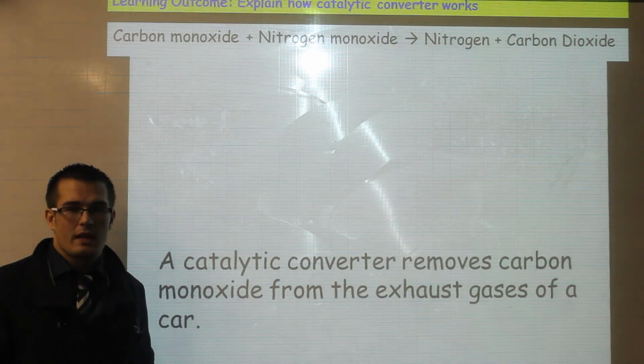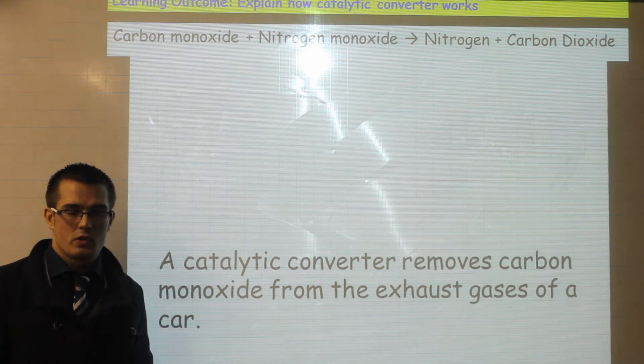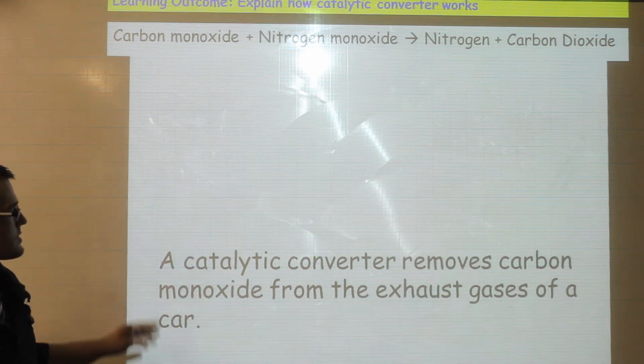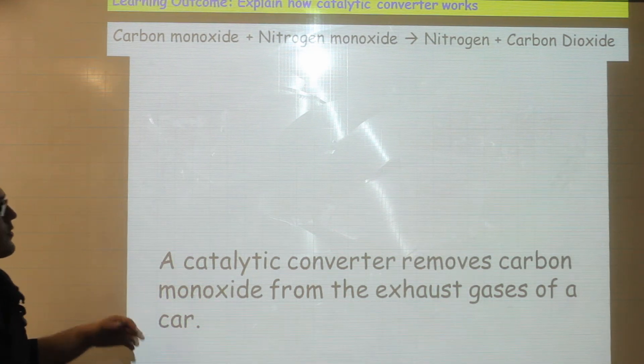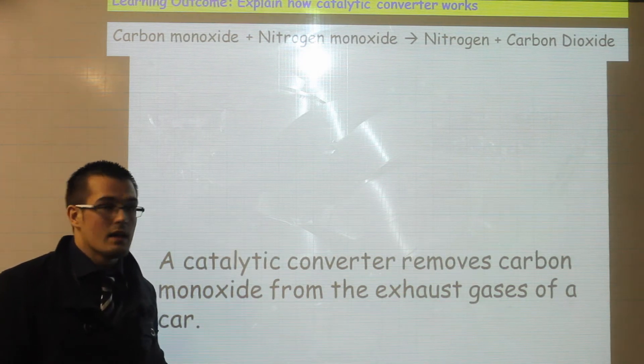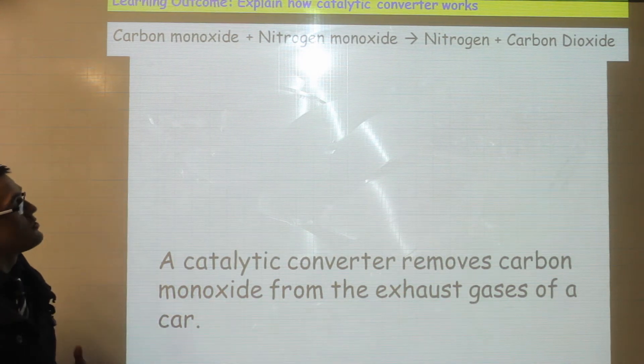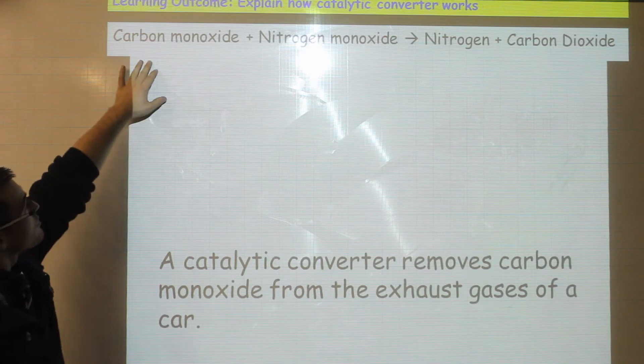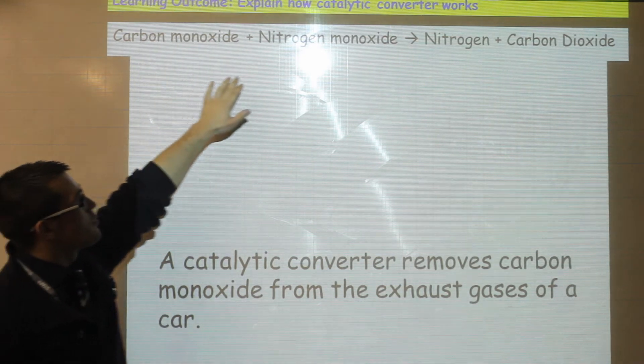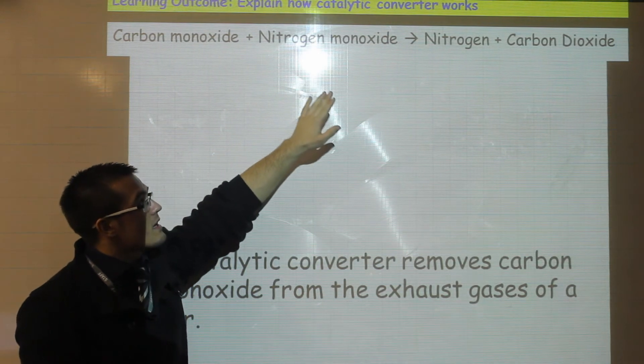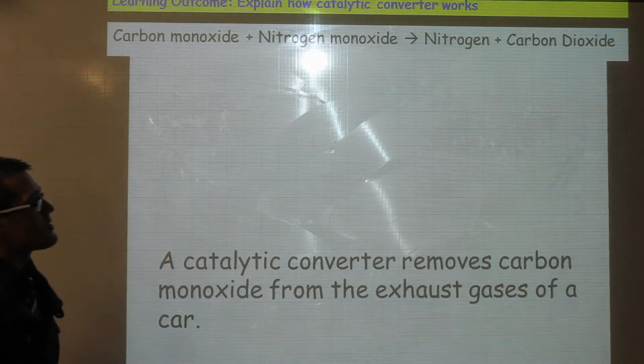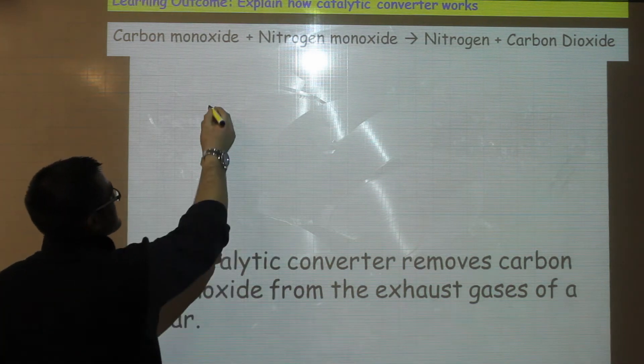Now we need to understand and explain how catalytic converters work. So the job of a catalytic converter is to remove carbon monoxide from the exhaust gases of a car. It also removes nitrogen monoxide. So as a reaction we have carbon monoxide plus nitrogen monoxide gives out nitrogen and carbon dioxide. So we can write this as a simple equation.